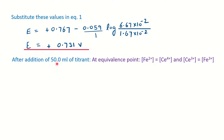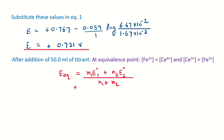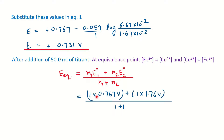After adding 50 mL of titrant, we are at the equivalence point. At the equivalence point, the concentrations of the species are equal. We use the direct formula: E(equivalence) = (n₁E₁° + n₂E₂°) / (n₁ + n₂), where n₁ and n₂ are the numbers of electrons for each redox system. Using the given formal potentials for Fe³⁺/Fe²⁺ and Ce⁴⁺/Ce³⁺, the equivalence point potential is calculated to be 1.26 V.